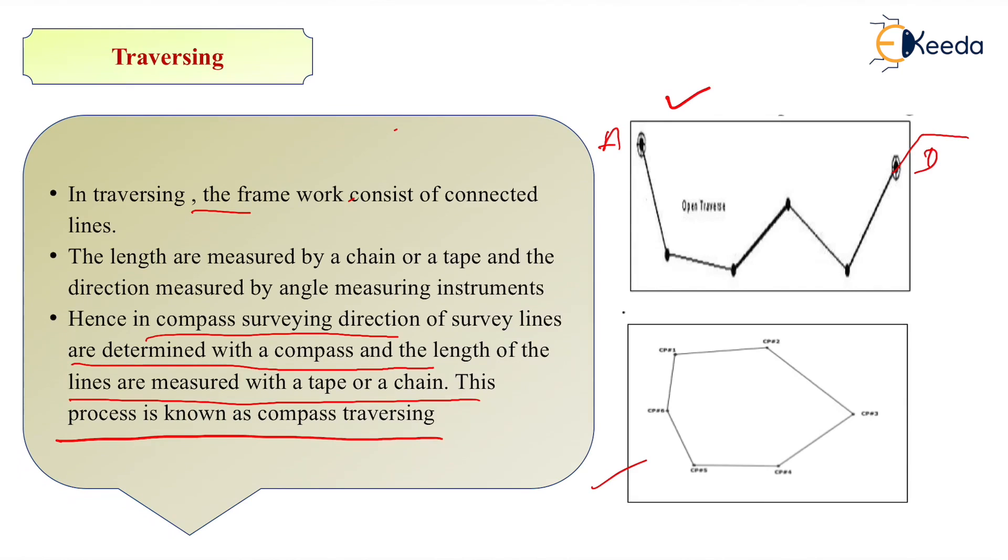In these cases we have to use open traversing, while whenever we are doing a survey of a closed area or for the survey of buildings we have to use closed traverse. So in closed traverse, starting point A and the end point should coincide with each other.